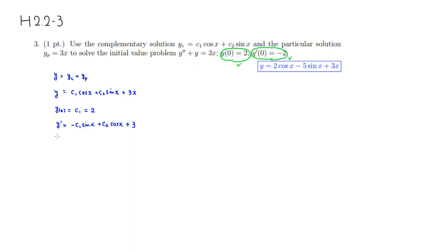So when you plug in x equals 0 into the y prime function, we get sine of 0 is 0, so it goes away. Cosine of 0 is 1, so you get c2 plus 3, and we're supposed to get negative 2 from there. So this means that we can simply subtract 3 to get the c2 value, which is going to be negative 5.